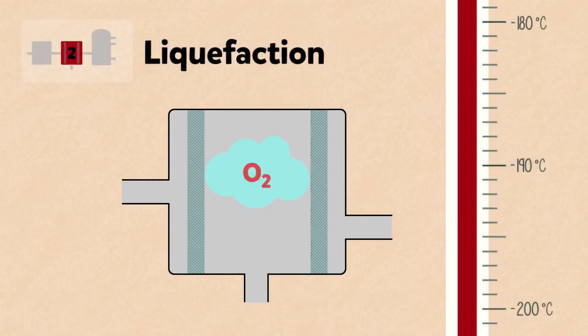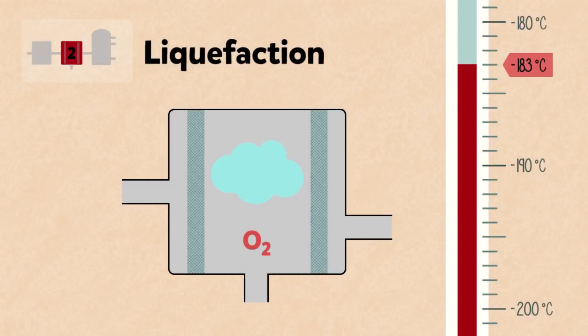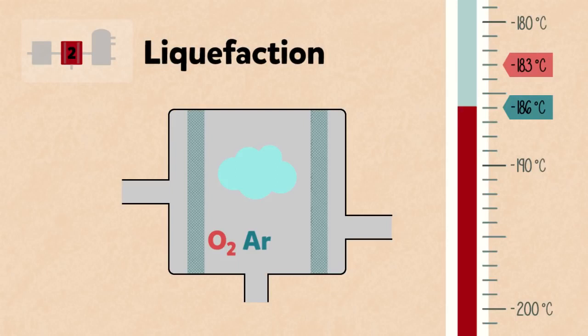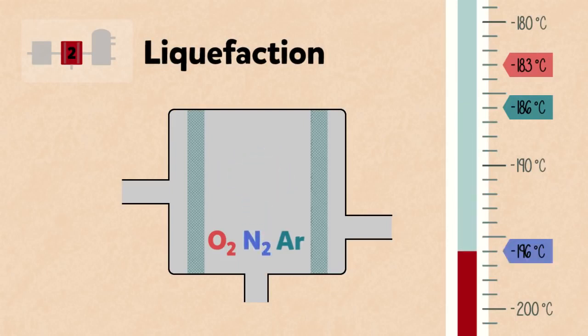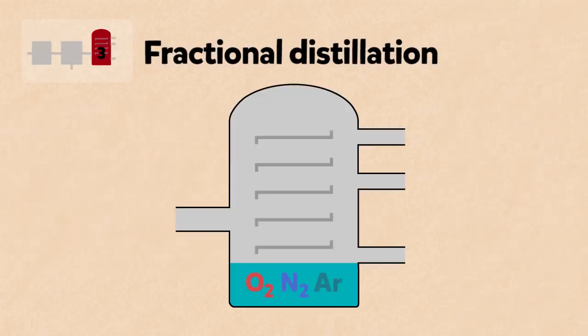Carbon dioxide is then removed at minus 79 degrees Celsius when it freezes. The oxygen liquefies at minus 183 degrees Celsius, argon at minus 186 degrees Celsius, and nitrogen liquefies at minus 196 degrees Celsius. The liquid nitrogen, argon and oxygen are then separated by fractional distillation.